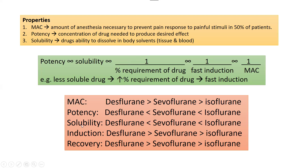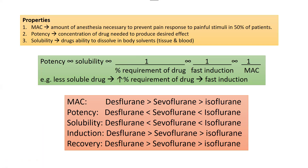Induction and recovery are inversely proportional to solubility. Isoflurane is the most soluble drug, so it has the slowest induction and slowest recovery. Desflurane is the least soluble, which is why its induction and recovery are very fast, because it is least soluble in the blood and tissues of the body.